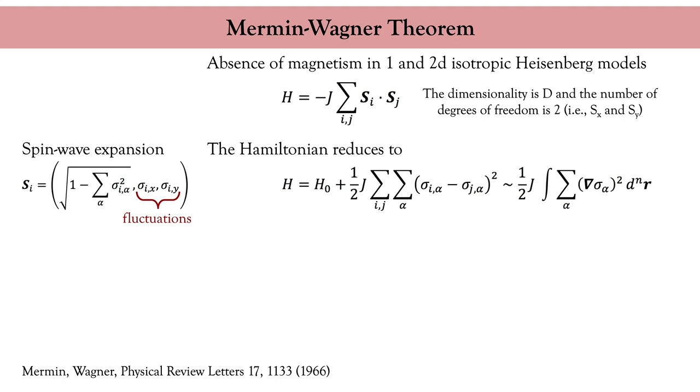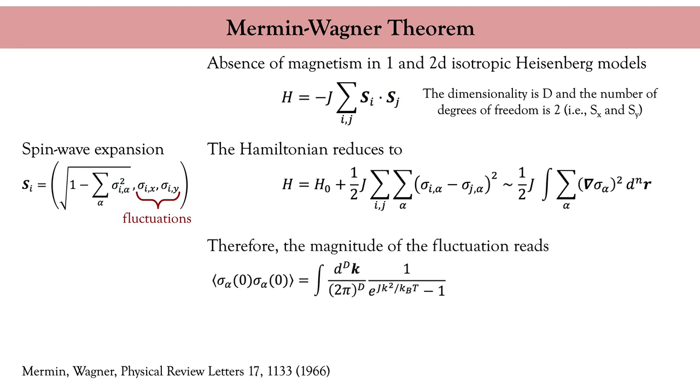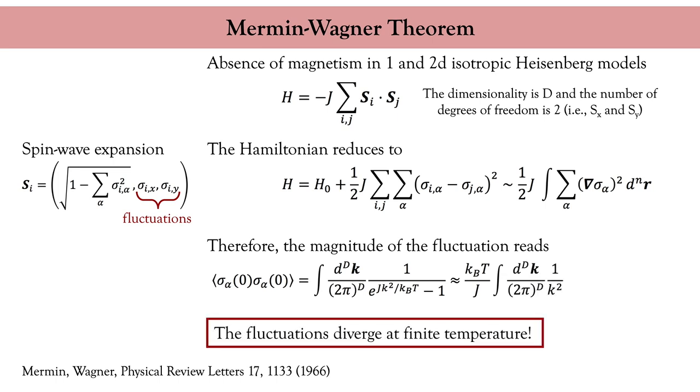You directly see that I can minimize the energy by allowing for spatial fluctuation of the magnetic order. If I calculate the magnitude of these fluctuations, I end up with a divergence at finite temperature. This means that no long-range order, either ferro, ferri, or antiferromagnetic, survives in isotropic one or two-dimensional magnets.